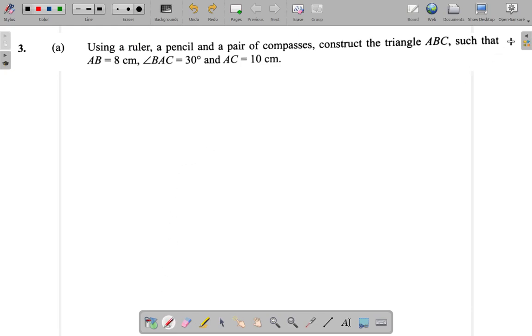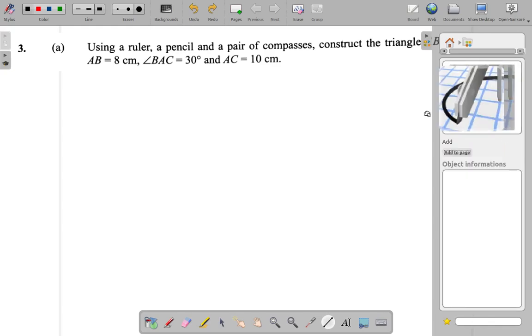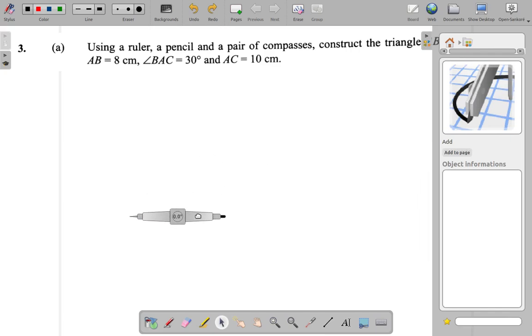Now, you first of all have a ruler and a pair of compasses. I want a pair of compasses. Where is the compass? Alright, good. So first of all, I have A here. This is my A. I open the compass to a radius of 8 centimeters. Let me open it to 8. I'll use this as my 8.